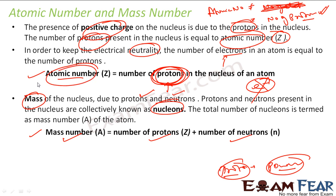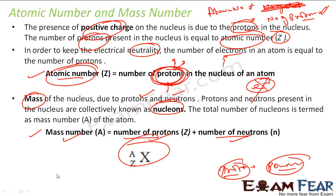When we talk about atomic number, we talk about protons — protons are the powerful ones that determine properties. Atomic number is nothing but the number of protons, and mass is nothing but the total mass of the atom. Since electrons have negligible mass, the mass is essentially the mass of protons and neutrons. The symbol for any element is X with Z as the atomic number below and A as the mass number above.